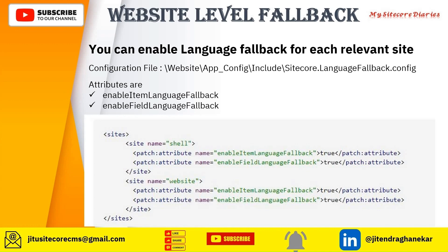It is very important to set up the website level fallback. To clarify, you are enabling the item level fallback and enabling the field language fallback at the website level. This should be done in the configuration file at website/config/include set for language fallback dot config. Basically, you will create a patch file to override this file.